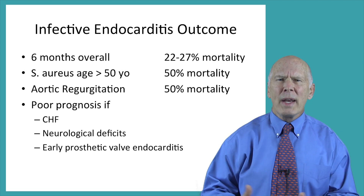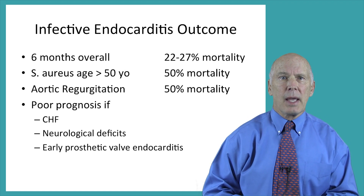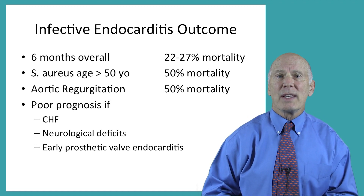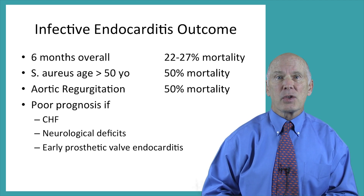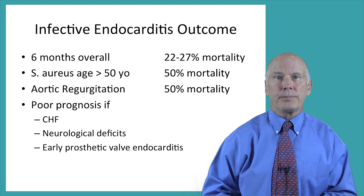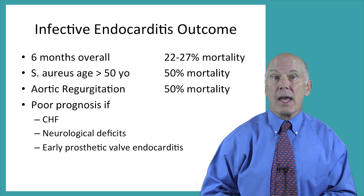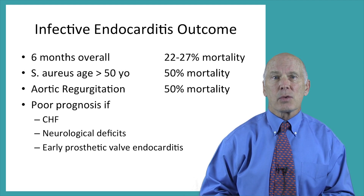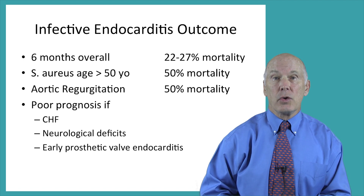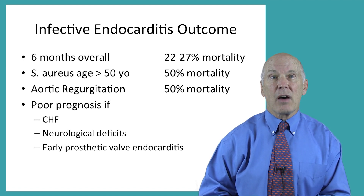What is the outcome for patients with infective endocarditis? At six months, the overall mortality is 22 to 27 percent. Patients with Staph aureus who are over the age of 50 have a higher mortality of 50 percent, as do patients with aortic regurgitation. Prognosis is also poor in patients with congestive heart failure, neurological deficits, and early prosthetic valve endocarditis.